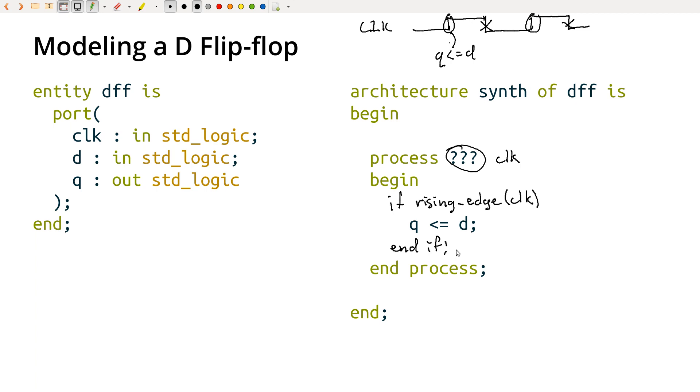And the synthesis tool will try to build it for you. So again, at least in behavioral modeling, structural modeling is different, but here you're not telling the tool what to build. You're telling it what behavior you want, and it will try to build you something, build some kind of circuit that will implement that behavior. So yes, in this case, this description will actually produce a flip-flop. This is how you build a flip-flop in VHDL.